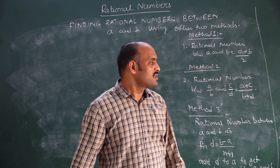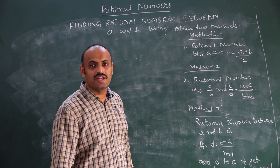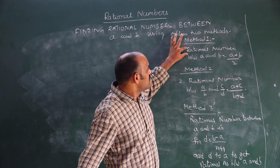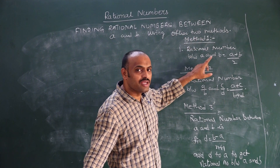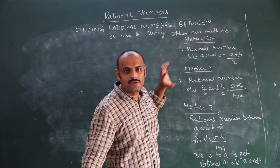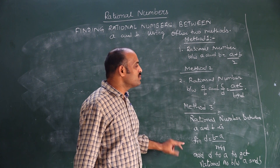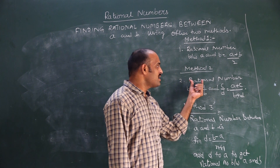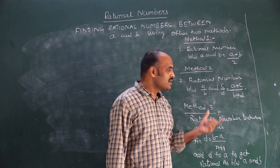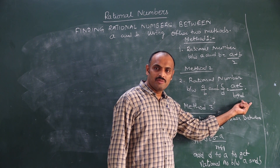Now we are going to discuss the other two methods — how to find rational numbers between given two rational numbers. In Method 1, the rational number between a and b is a plus b by 2. We have used this method and solved 5 to 6 questions. In Method 2, to find a rational number between a by b and c by d, just add the numerators divided by the sum of the denominators.